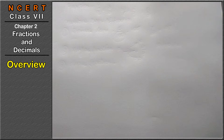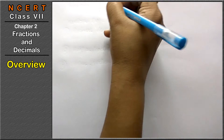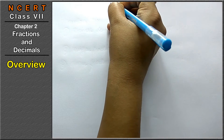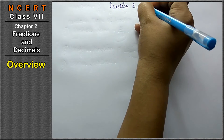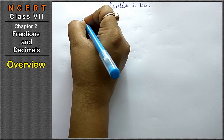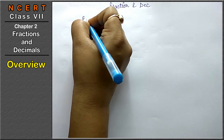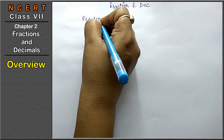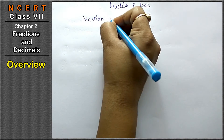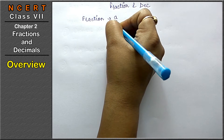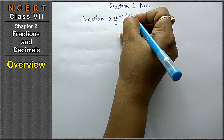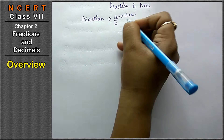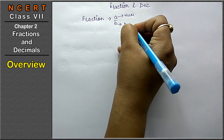Hello friends, welcome to Learn Maths. Today we will do chapter number 2, that is Fractions and Decimals of Class 7. The first question that arises is: what is a fraction? Any quantity that is in the form of a upon b is called a fraction. The upper part is called the numerator and the lower part is called the denominator.